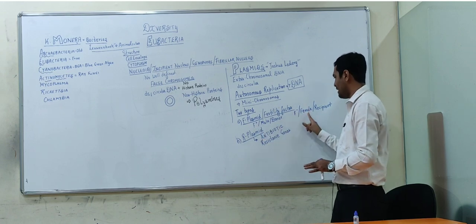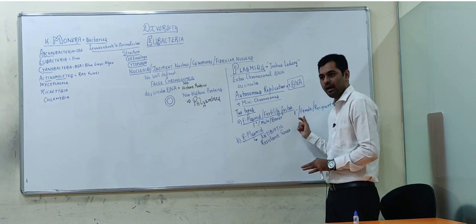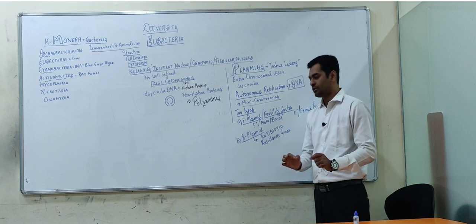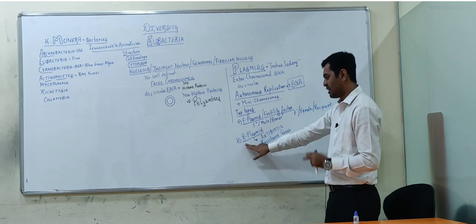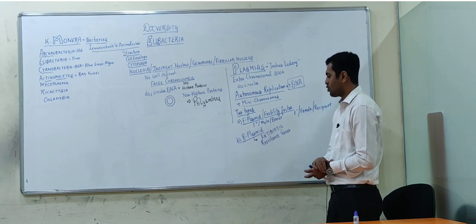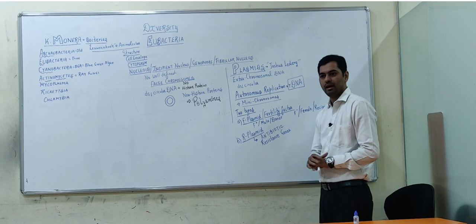F-plus can give plasmid to F-minus. By which process? Conjugation. And R-plasmid has certain antibiotic resistance genes which help the bacteria survive in unfavorable conditions.